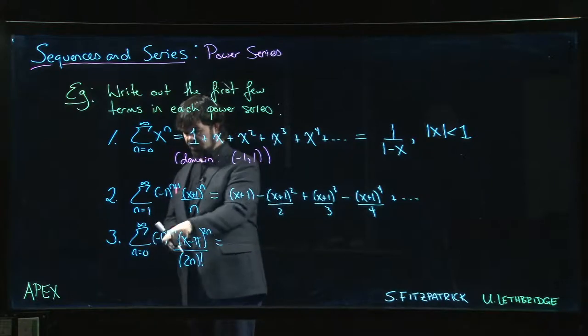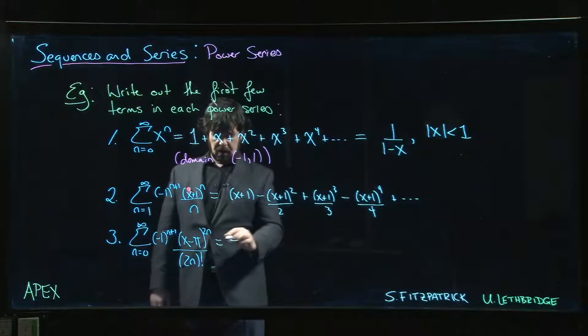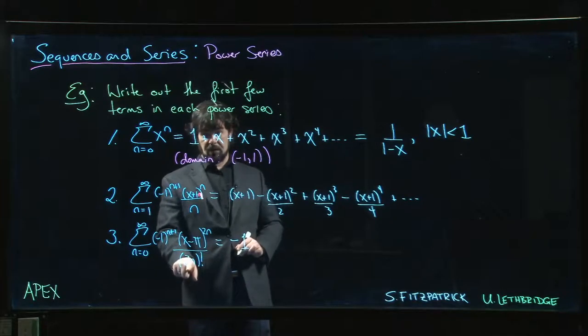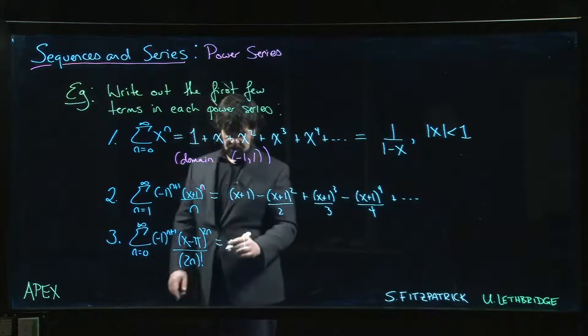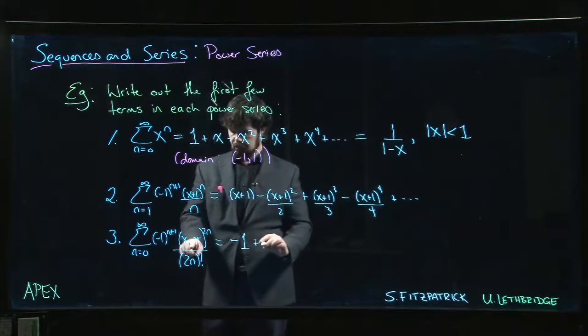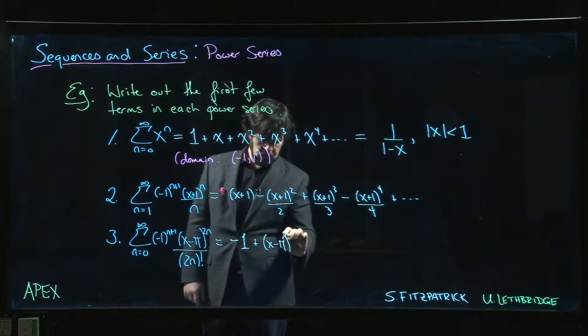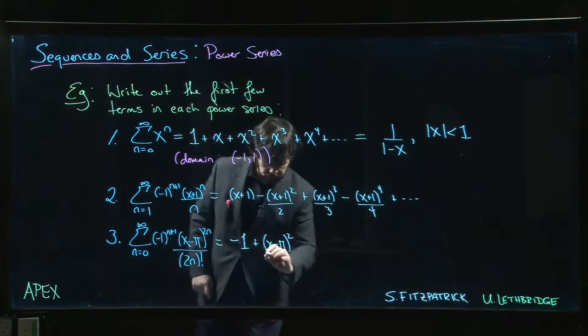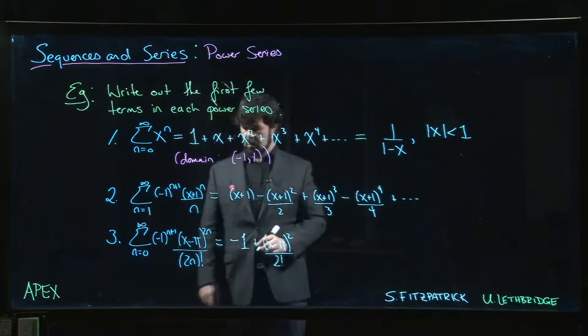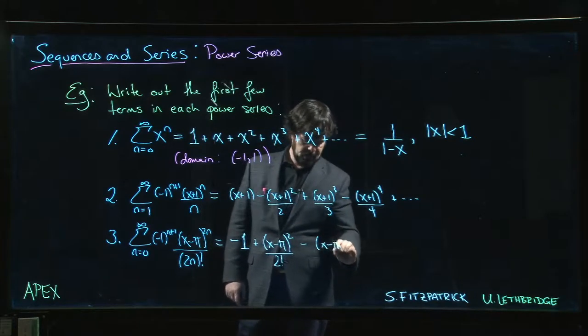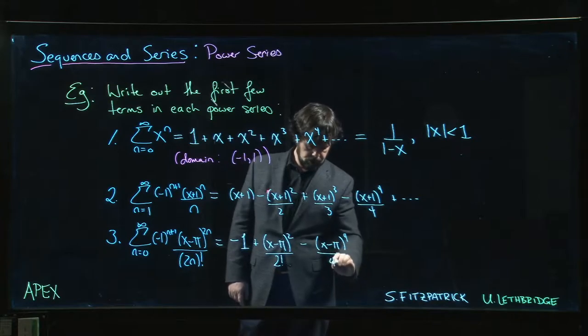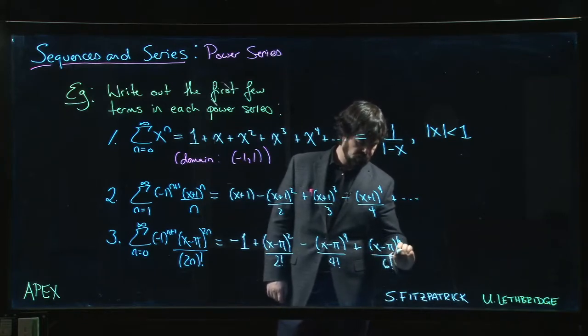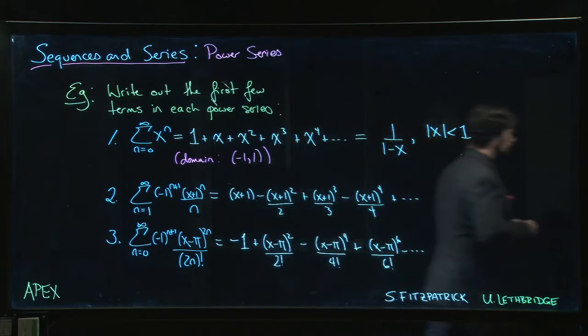So this one here, n starting at zero, so we have a minus sign to begin with. So we have minus, well, it's just minus one. Because this is going to be x minus pi to the zero. That's zero factorial. Zero factorial is equal to one. We've seen that. Okay, so minus one plus, so now it's going to be x minus pi, sorry, we're on n equal to one, so squared, two times one, divided by two factorial, there we go, and minus x minus pi to the four, four factorial, plus x minus pi to the six, six factorial, and so on. Here we go.